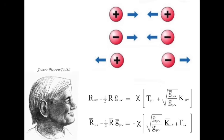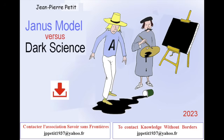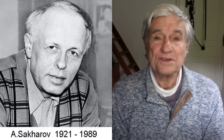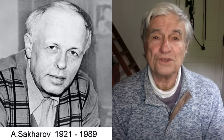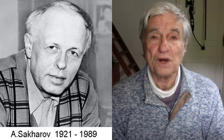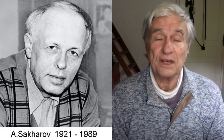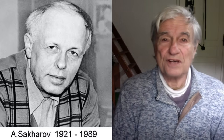This seems to be a little bit out of the scope of the present video. To know more, please go to another comic book you can download free at my website Savoir Sans Frontières, entitled Janus Model versus Dark Science. The origin of the research was the idea of Andrei Sakharov, who thought that the primeval antimatter was located in another universe. In such a model, this antimatter is located in a sort of parallel universe — and this work solves the problem.